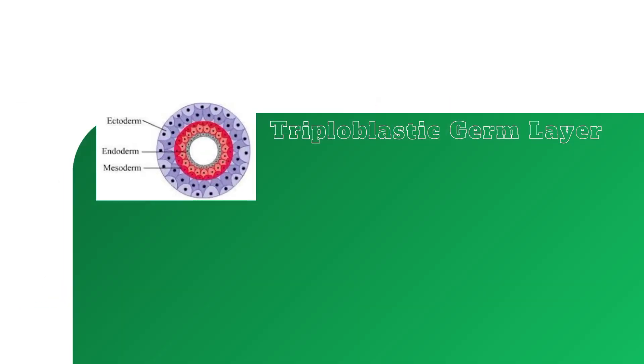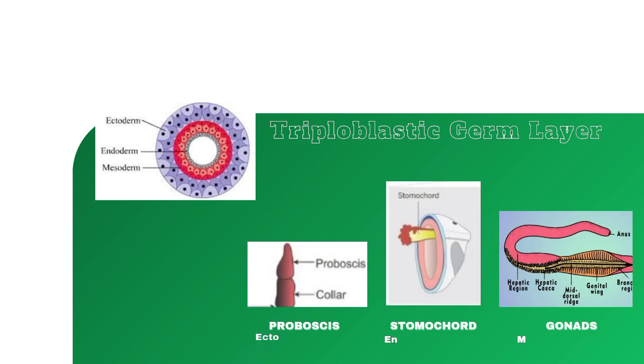Its body is made up of triploblastic germ layers. Its proboscis is ectodermal in origin, stomochord is endodermal, and gonads are mesodermal in origin.